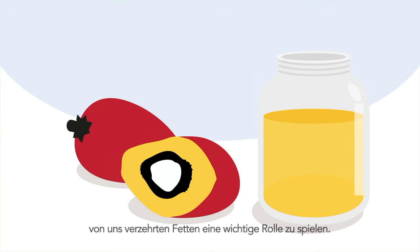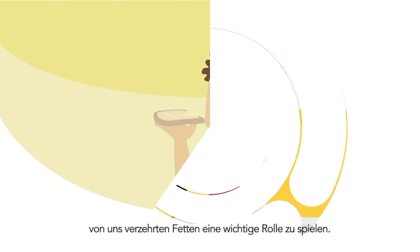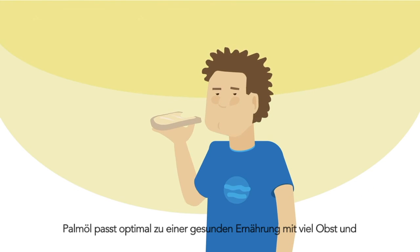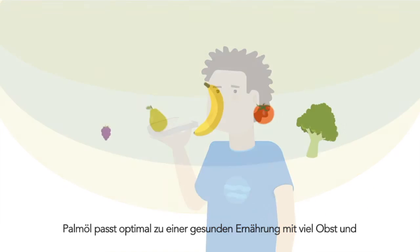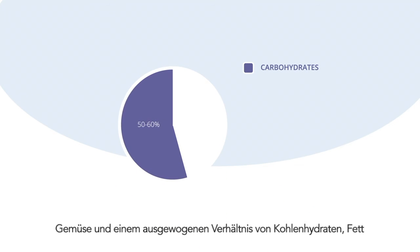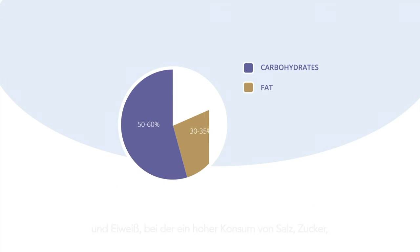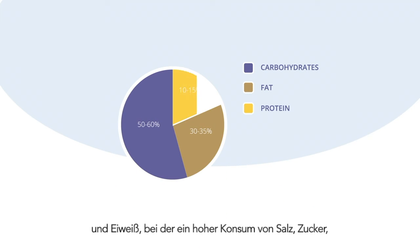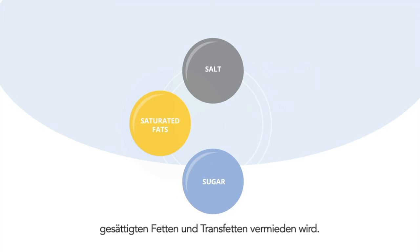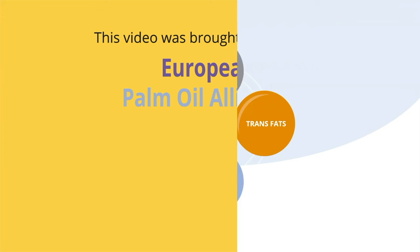Because of its unique composition, palm oil has a role to play among the fats we consume, and fits in a healthy diet with lots of fruits and vegetables, a balanced carbohydrate, fat and protein intake, and avoiding high intake of salt, sugar, saturated fats and trans fats.